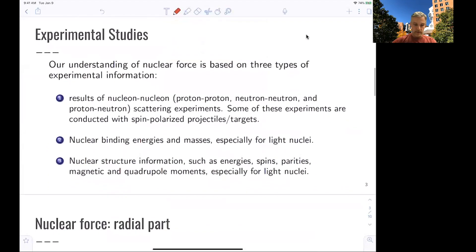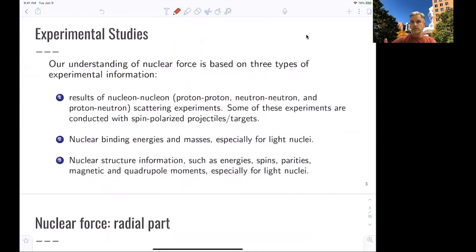So what is the experimental status? Our understanding of the nuclear force is based on various kinds of experimental information. The first comes from nucleon-nucleon, proton-proton, neutron-neutron, and proton-neutron scattering experiments. And some of those experiments have the benefit of using spin-polarized projectiles.